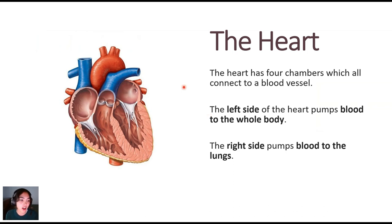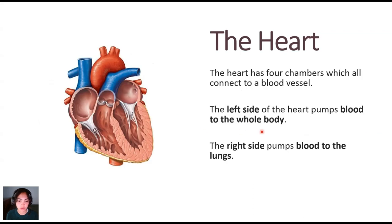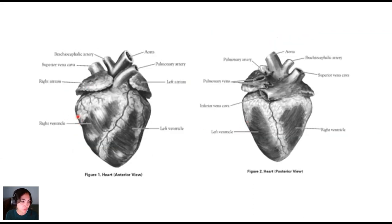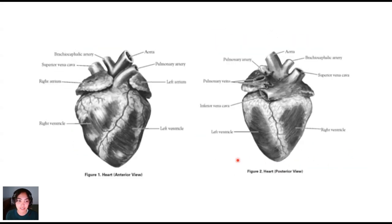The heart has four chambers. The left side of the heart pumps blood to the whole body, while the right side of the heart pumps blood to the lungs. So we have our left atrium and left ventricle — that's the side that pumps to the whole body — and our right atrium and right ventricle, which pumps blood to the lungs.